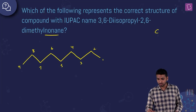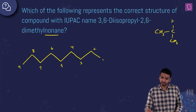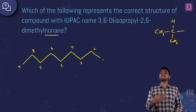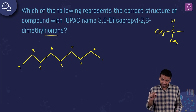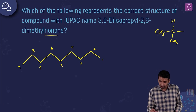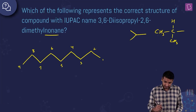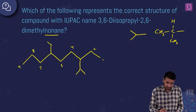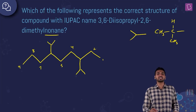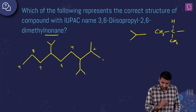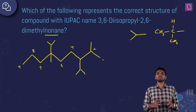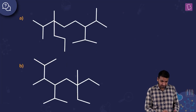An isopropyl group has branching at the second carbon of a three-carbon chain. In bond-line structure notation, we attach an isopropyl group at position 3 and another at position 6. Then we add a methyl group at position 2 and another methyl at position 6. This gives our target structure.